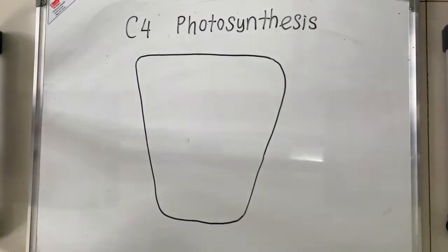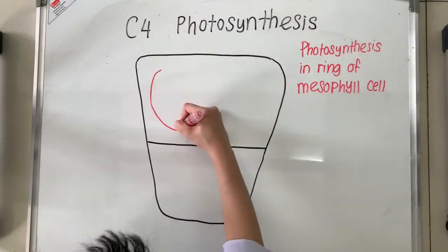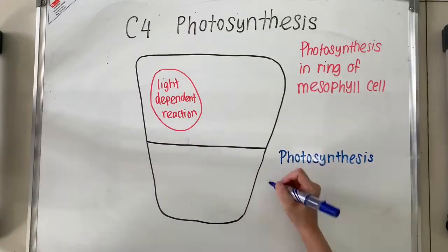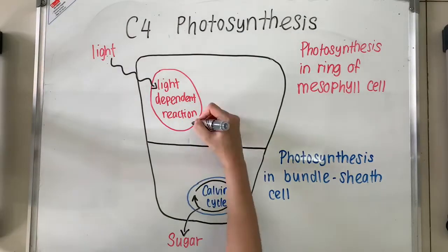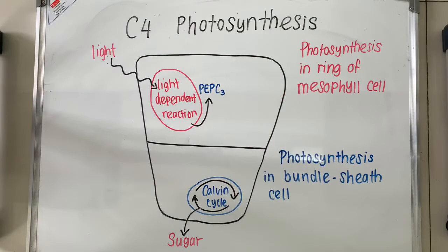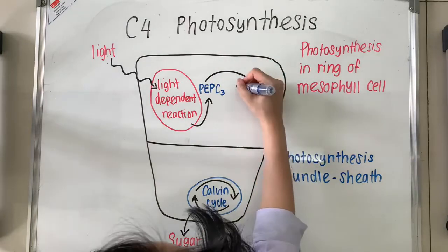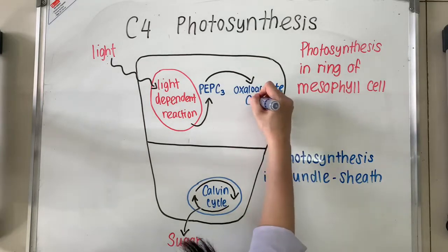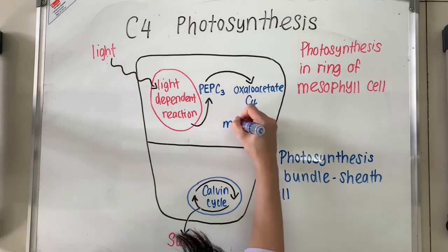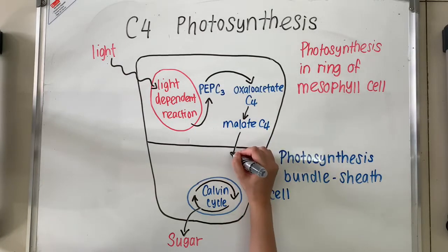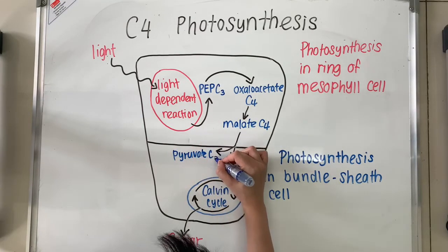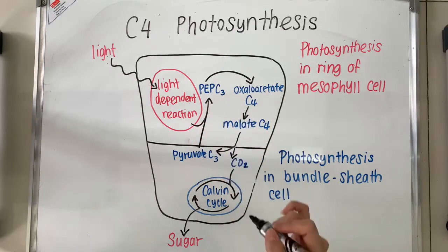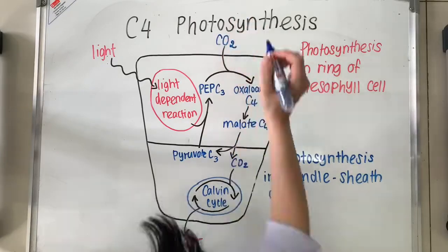Moving on, we'll be looking at how the process of photosynthesis takes place in the mesophyll cells and the bundle sheath cells in the C4 plant. PEP reacts with carbon dioxide with the help of the enzyme PEP carboxylase and forms a 4-carbon molecule called oxaloacetate, which will then be converted into malate. Malate will then be decarboxylated and turns into a pyruvate of 3 carbons. Meanwhile, the carbon dioxide removed from malate diffuses from the mesophyll cells into the bundle sheath cells, where it is passed to RuBP by RuBisCO, the Calvin cycle starts, and sugar is produced.